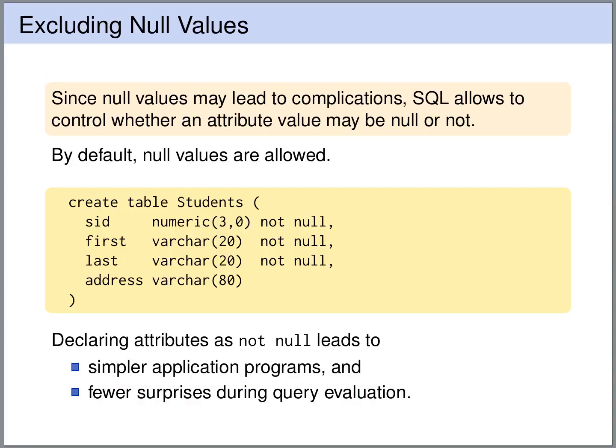Since NULL values can lead to complications, SQL allows to control whether NULL values are allowed or not for a certain attribute. By default, they are allowed. If we want to exclude them, we can do this by explicitly mentioning this as a constraint in the createTable statement. So here, NULL values are excluded from the attribute SID, from first and from last, but they are allowed for the address.